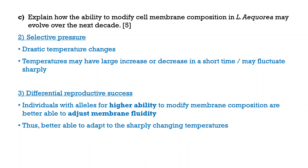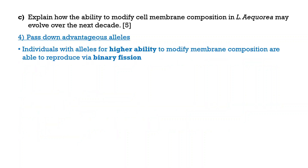So this is how the selective pressure differentiates individuals with different abilities to adjust their membrane. Different individuals therefore have different likelihoods of surviving. Those with better, higher abilities to adjust and modify their membrane according to the temperature will be more likely to survive. These individuals with better abilities will be able to survive and reproduce.